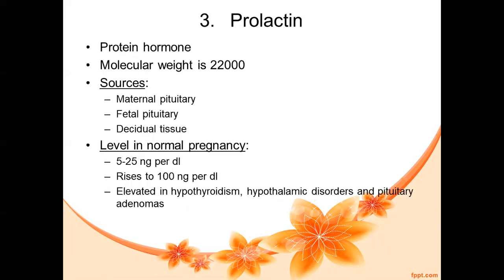The third hormone is prolactin, also a protein hormone with a molecular weight of 22,000. Prolactin is produced from the maternal pituitary gland, the fetal pituitary gland, and also from the decidual tissues — that is, the endometrium. So prolactin is produced from the endometrial tissues and the pituitary glands of both mother and fetus during pregnancy.